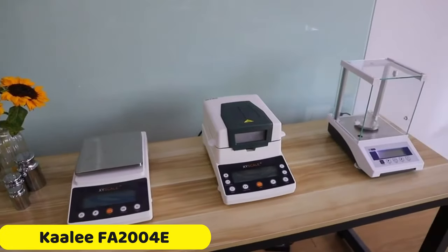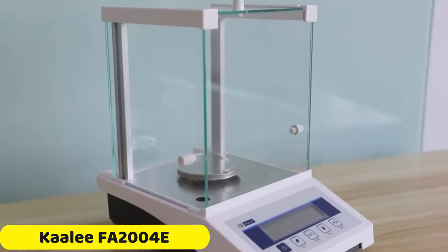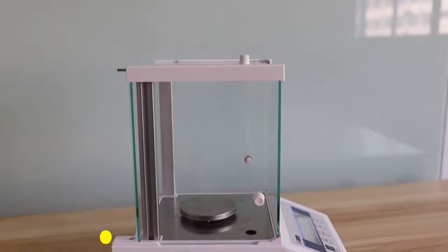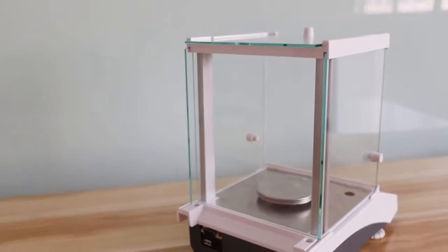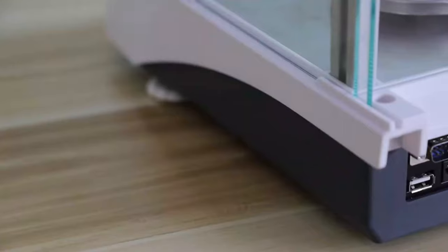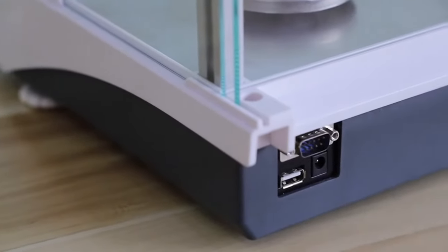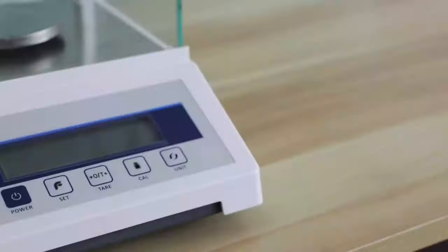Number 2: Kali FA2004E Analytical Balance. The Kali FA2004E Analytical Balance is a precise, reliable, and user-friendly laboratory balance from mainland China. Its sleek design and robust build ensure durability in demanding lab environments.